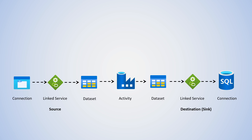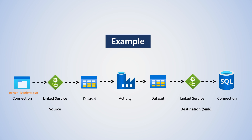Let's think of an example. We could have a connection on the left that's a JSON object trying to get into a specific SQL table. The linked service for the source connection could be blob storage, and for the database, Azure SQL. What we can do is just copy that data from the source to the destination. While this is a simple example, the concepts are what you can build on for any activity.